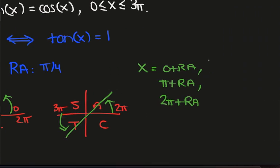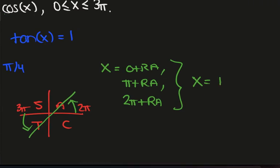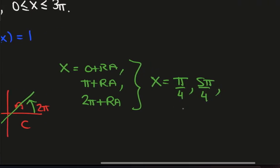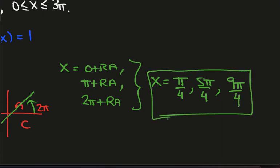And we don't include this one because this one goes past 3 pi. So if we just calculate these, we get x is pi on 4, pi plus pi on 4 is 5 pi on 4, and 2 pi plus pi on 4 is 9 pi on 4. And that's it.